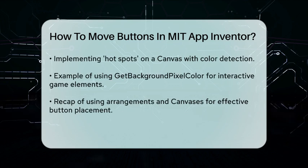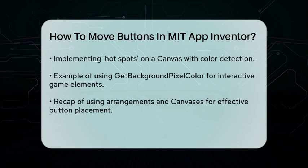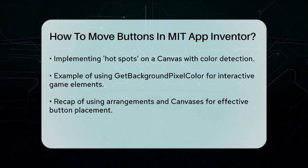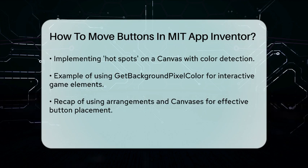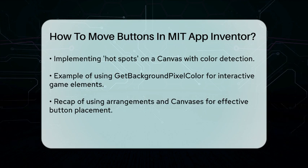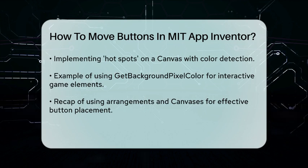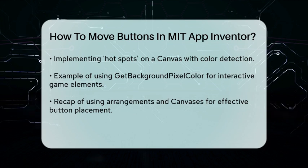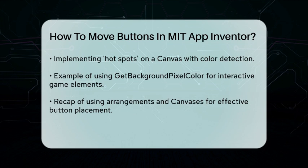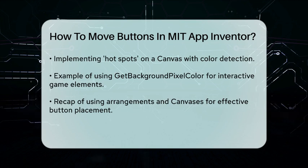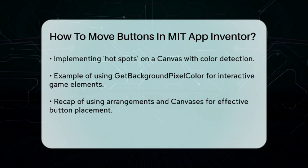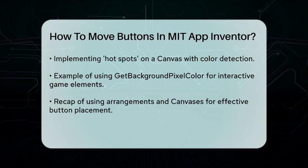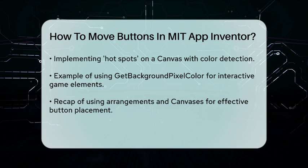For example, if you have a game board background, you can paint each cell with a slightly different color. Then, in your blocks, you can use the Get Background Pixel Color block to determine which cell was touched and perform the corresponding action.